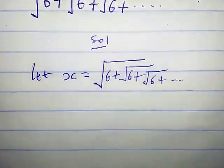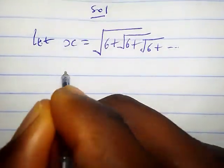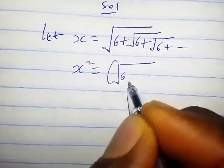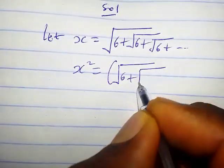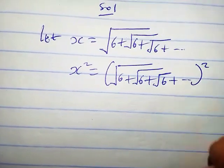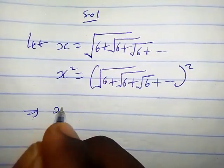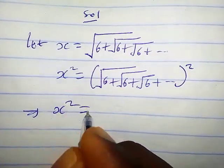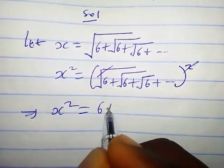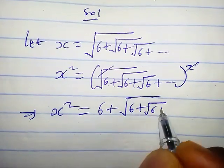Let's take the square of both sides of this equation. So we're going to have x squared equals the square root of 6 plus the square root of 6 plus... squared, which gives us x squared equals 6 plus the square root of 6 plus the square root of 6 and so on.